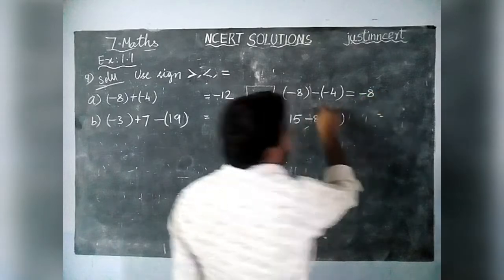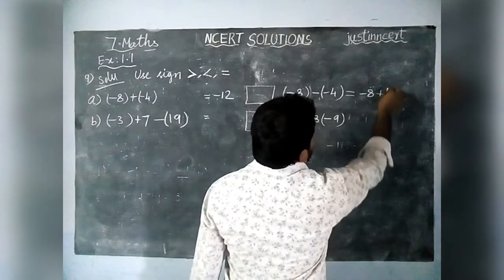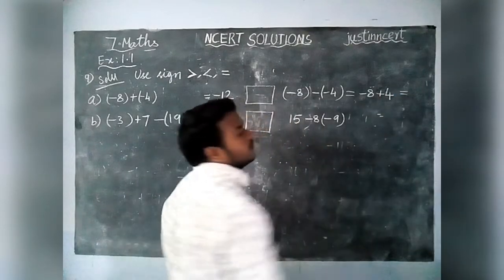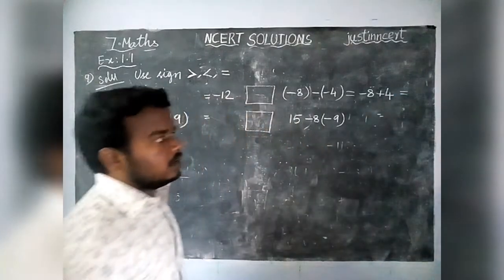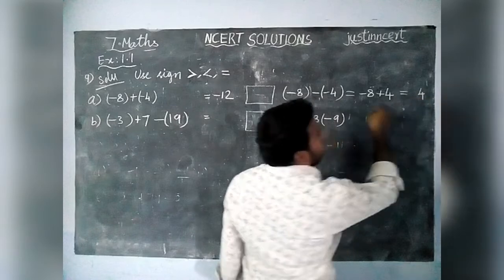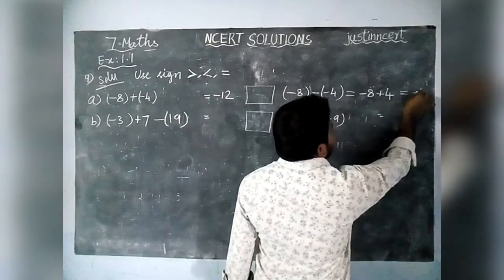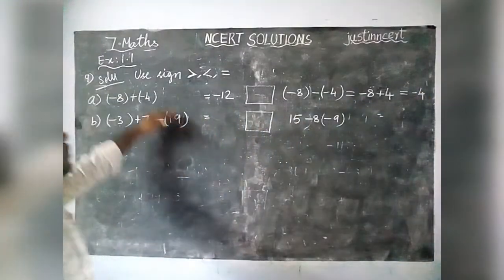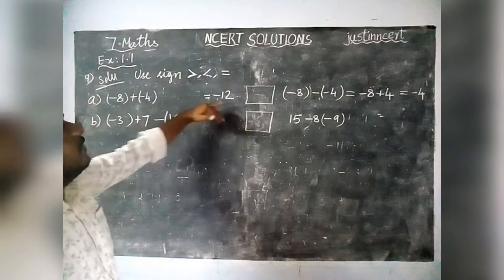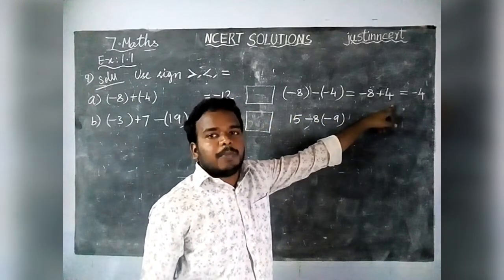So we have -8 minus of minus 4, which equals -8 plus 4. Now the signs are different, so we find the difference: 8 minus 4 is equal to 4. The greatest number is 8, and in front of 8 there is a minus sign, so the answer is minus 4. The left hand side value is minus 12, and the right hand side value is minus 4.